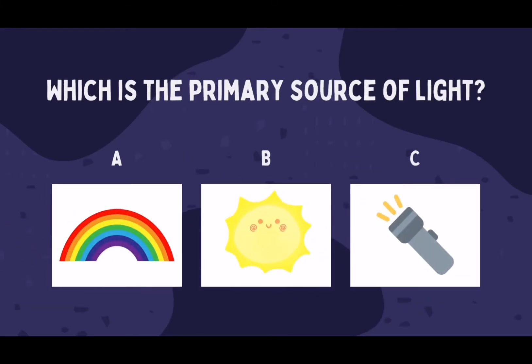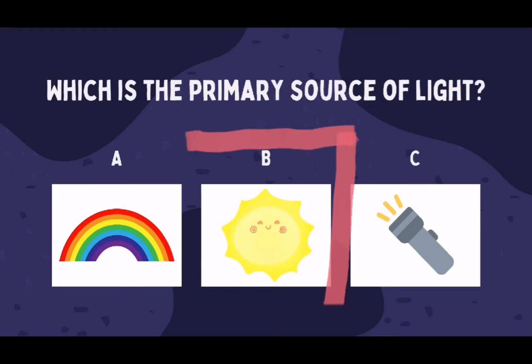Number 1. Which is the primary source of light? A. Rainbow, B. Sun, C. Flashlight. The answer is B. Sun.